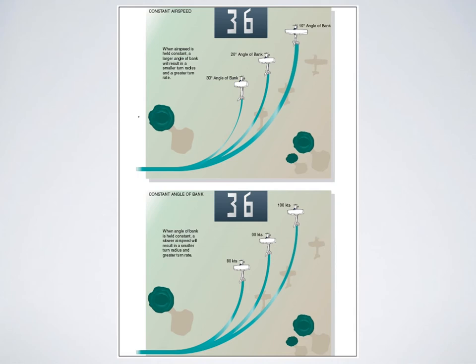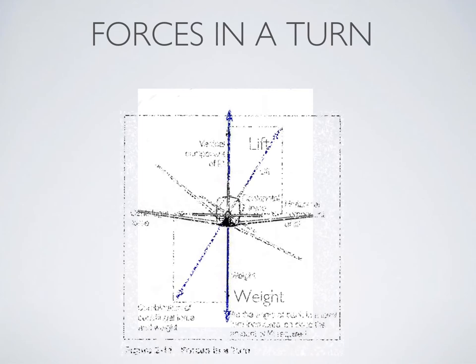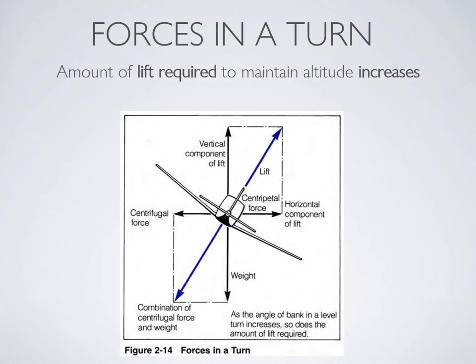However, there is a limit to both of these. In straight and level flight, the lift force counteracts the weight. In a turn, we divert some of that lift force towards the horizontal component of lift. As a result, there is less vertical component of lift, so more overall lift is needed to maintain altitude.